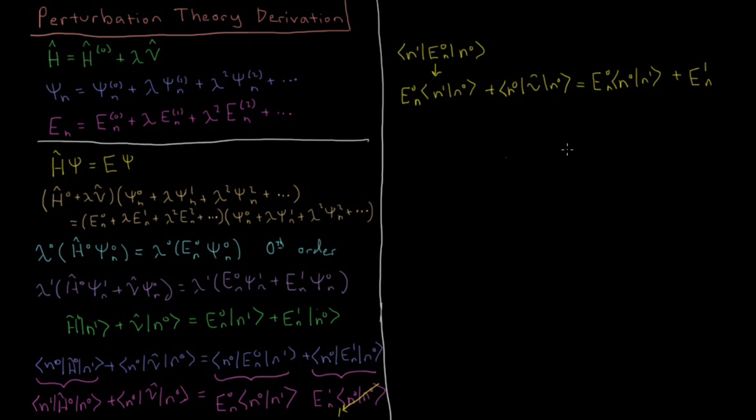What can we simplify now? Well, we have E0 n integral of n star 1, n0, and we have E0 n integral of n0 star, n1. We know that these two integrals are going to be equal to each other because this is just multiplication. These are going to be commutative, so these are going to simplify and cancel out with each other. If we subtract E0 n times this integral from each side, those two will cancel out.